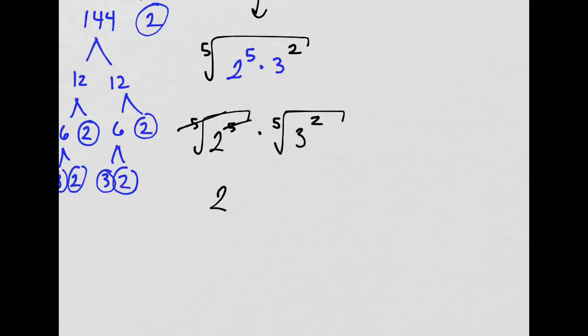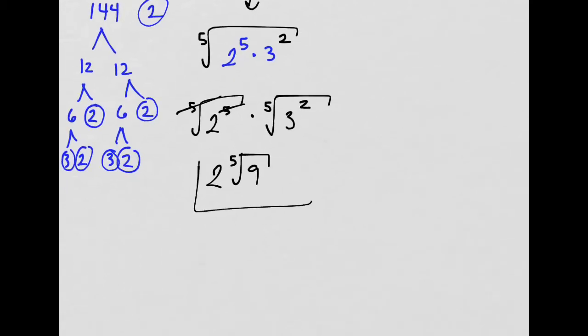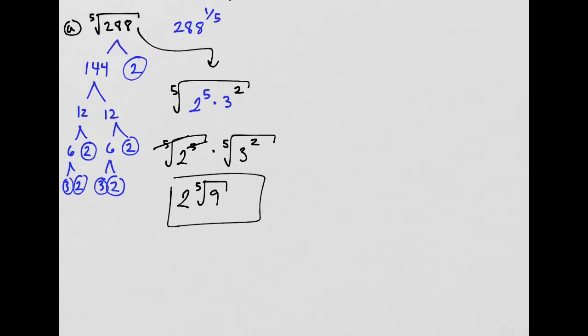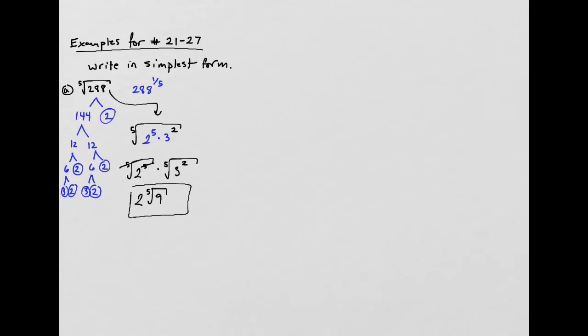And this is, well, that doesn't cancel out, so I can have either times 3 to the 2/5ths, or I can just leave it as the 5th root and a 2 there, or I can change it into 9. So, like that. And that's how your book is going to have the answer. 2 times the 5th root of 9. So that's the idea about those ones. You just break them down as much as you can.